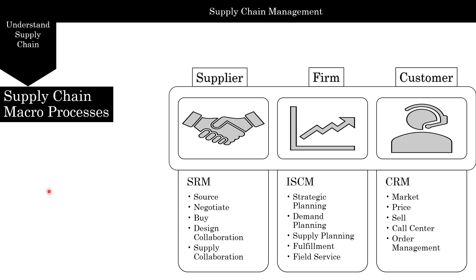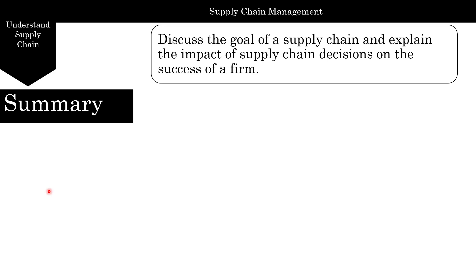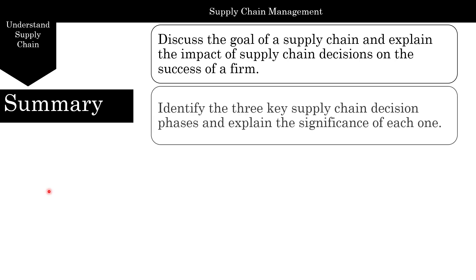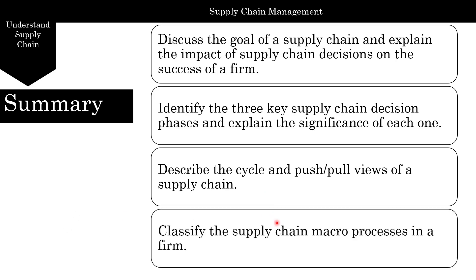We've finished chapter one. In summary, we looked at the goal of the supply chain and the impact of supply chain decisions on the success of the firm. We looked at the three supply chain decision phases and the significance of each, described the cycle and push-pull views of the supply chain, and classified the supply chain macro processes in a firm.